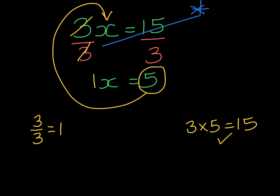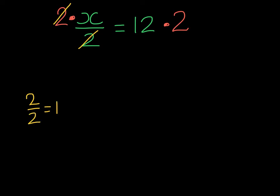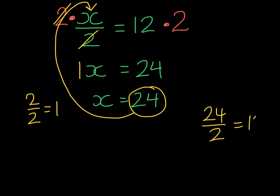Notice that the inverse operations in this case were dividing by 3 on both sides. Here's our next example, and we can see that X is being divided by 2. The inverse of dividing by 2 is to multiply by 2. In this case, we're going to use a dot to show this multiplication, because the typical X from the past would be very confusing here. If we multiply by 2 only to divide by 2, that's going to cancel, because 2 divided by 2 is 1. So on the left-hand side, I'm left with 1X, and on the right-hand side, 12 times 2 is 24. Now I can write X is equal to 24. At this point, I can take 24, substitute it into my original equation, and see if 24 divided by 2 gives me 12 — and it does, so we've solved it correctly.